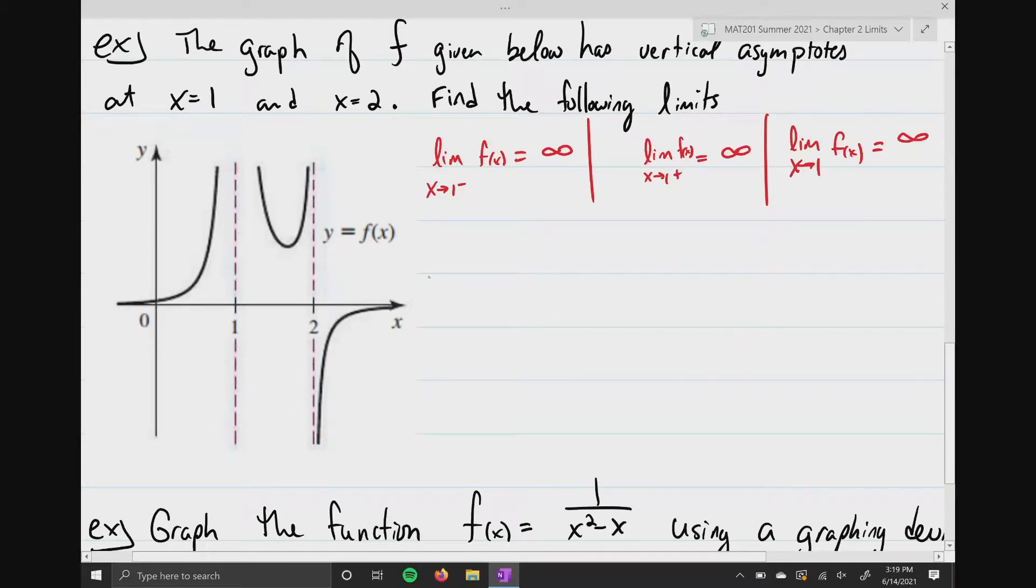Now let's look at the other situation here with the other asymptote that we have. So if we approach the limit as x approaches 2 from the left, we're coming this way, and you can see that my limit is going upward. So this is gonna equal infinity.